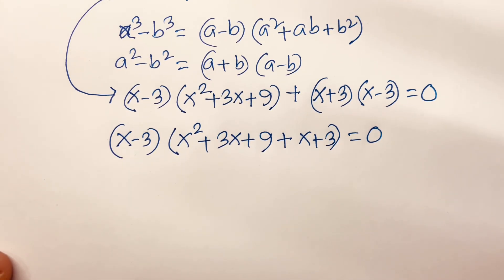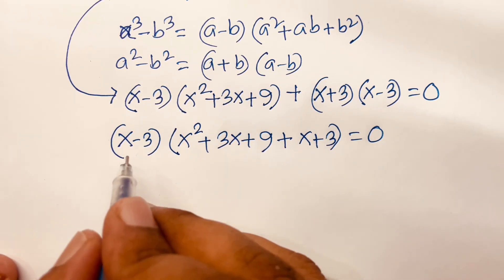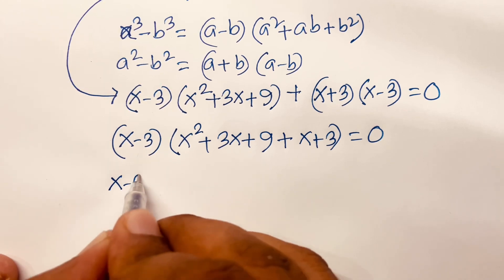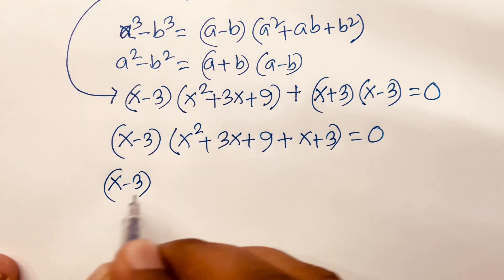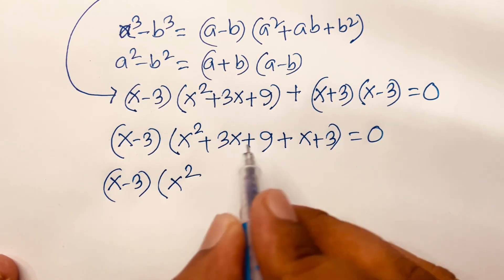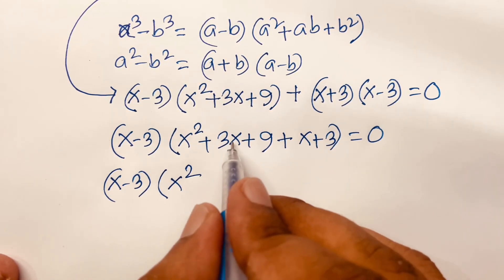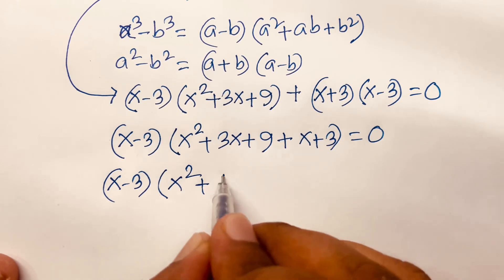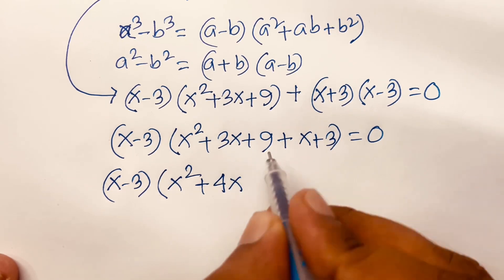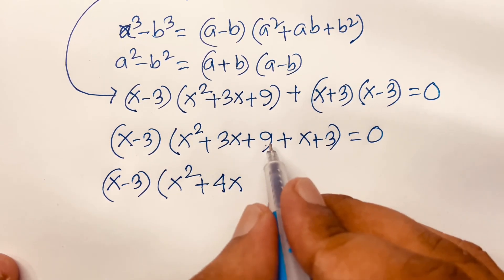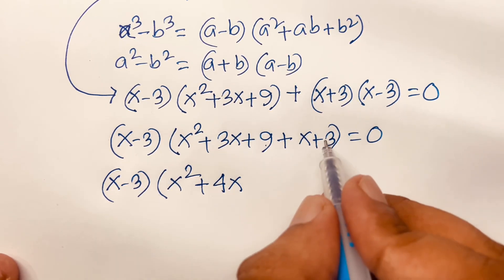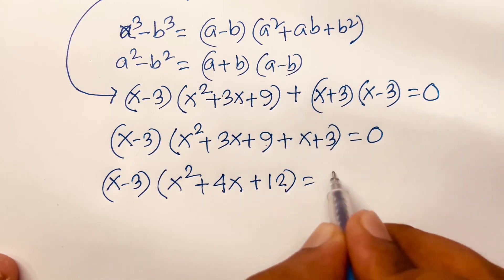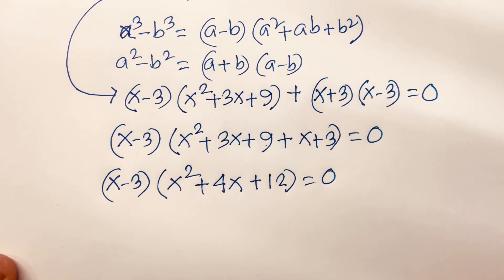This equation becomes (x minus 3) times (x² plus 4x plus 12) is equal to 0, since 3x plus x gives 4x and 9 plus 3 gives 12.